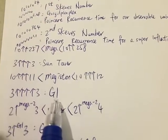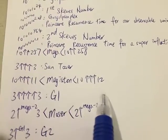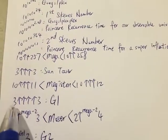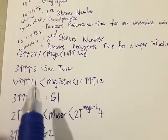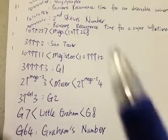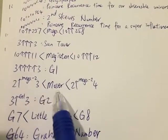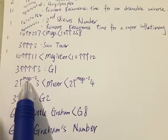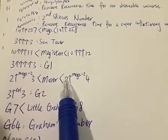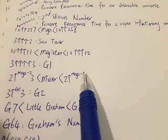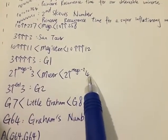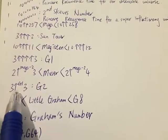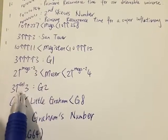Then we have G1 from Graham's number. This is the first step to construct Graham's number, which is 3 (4 arrows) 3. Next we have the Moser, which is between 2 with (Mega minus 2) up-arrows 3 and 2 with (Mega minus 2) up-arrows 4. Then we have G2, which is 3 with G1 number of up-arrows 3.